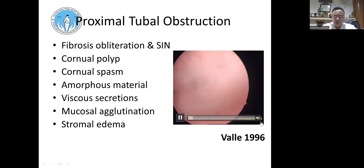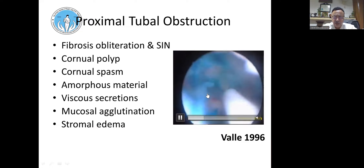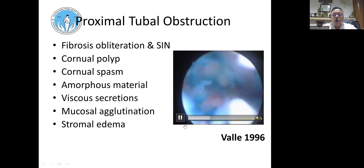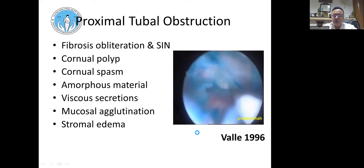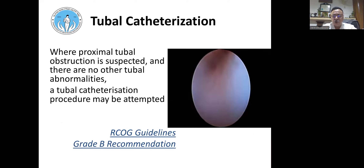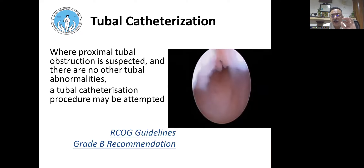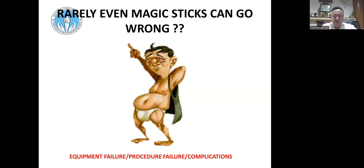We also perform cornual cannulation for cornual blocks under ultrasound guidance, confirming tubal spill either by laparoscopy or color Doppler ultrasound. Cornual blocks are managed well with the Teflon glide wire — not the metallic guide wire, which will perforate the tube.